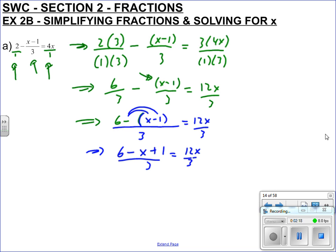And therefore we get 7 minus x on the top is 12x over 3. Now if you've got a over b is the same as c over b, if the denominators are the same and they're equal to each other, then the tops must be the same.